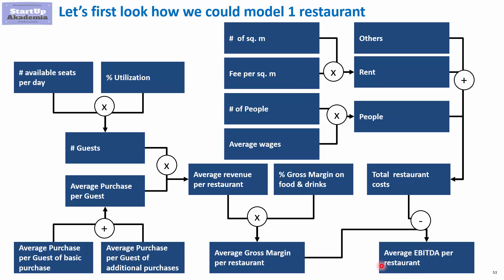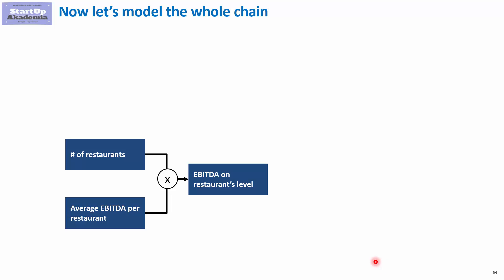Once we are done with the average EBIT per restaurant, we can model the whole chain. The drivers here are the number of restaurants we have and the average EBITDA, which together generate the EBITDA on restaurant level.